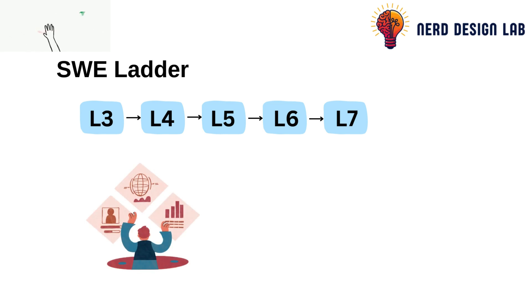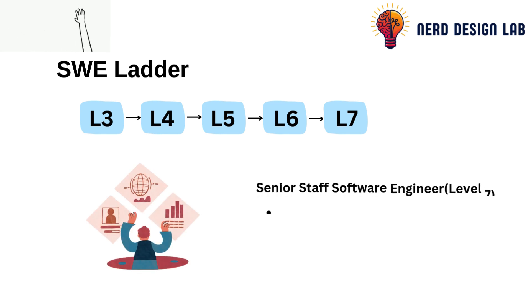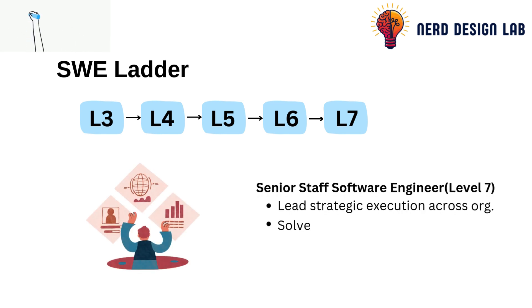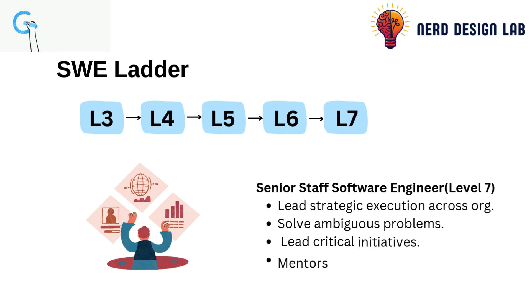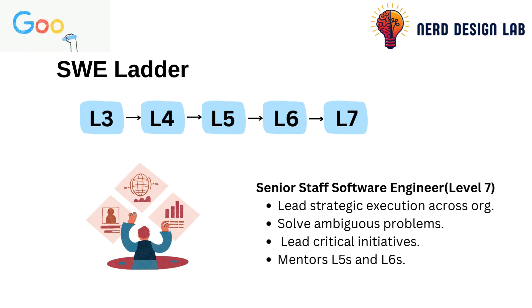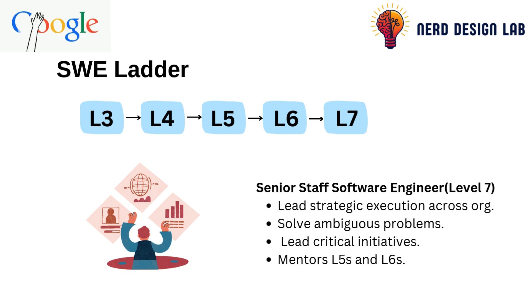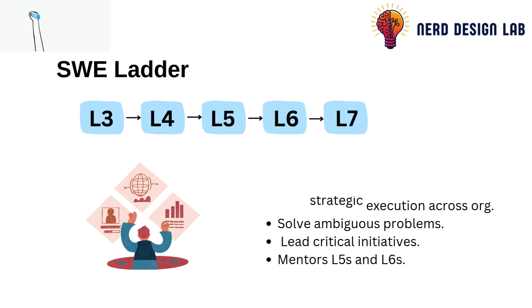Then we have L7. Senior staff engineers are technical leaders who think strategically across multiple teams or even organizations. You're expected to tackle ambiguous problems, lead critical initiatives, and mentor L6s and L5s.